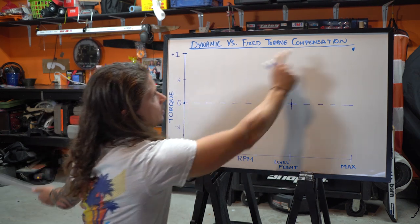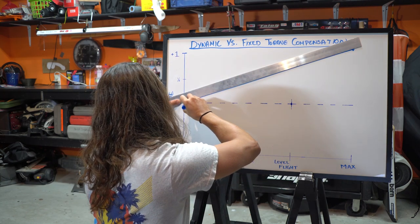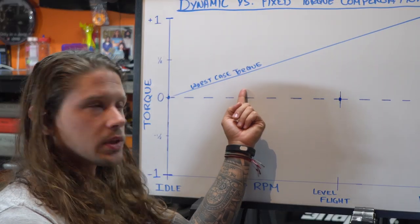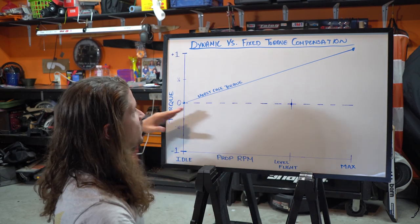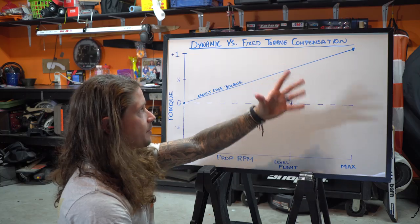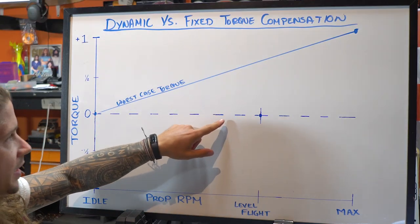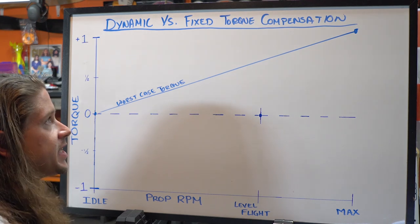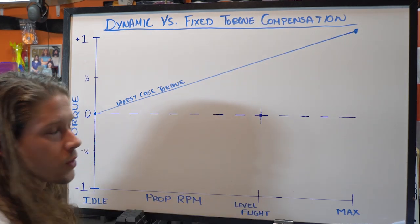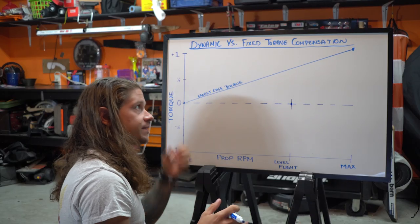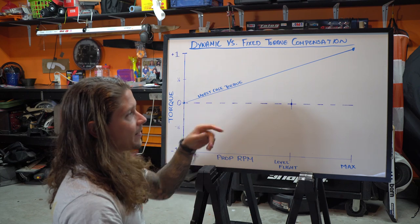Back to the torque line. Assuming no torque compensation: at idle the propeller isn't spinning meaningfully, so torque is negligible — we're at zero. At max RPM we have maximum torque, represented at positive one. So we draw that line. This is the worst-case torque line. If you had no torque compensation at all, getting this line down to the zero torque dotted line requires all pilot input — weight shifting, using brake to turn, whatever it may be.